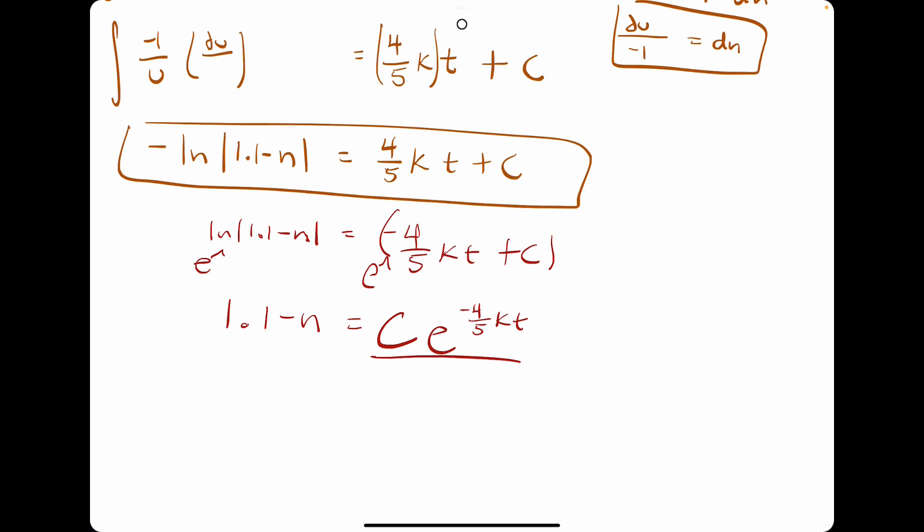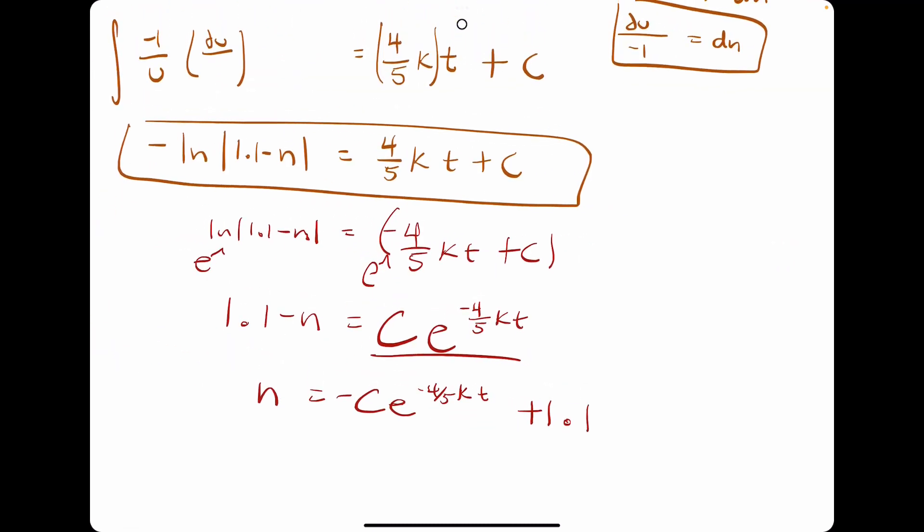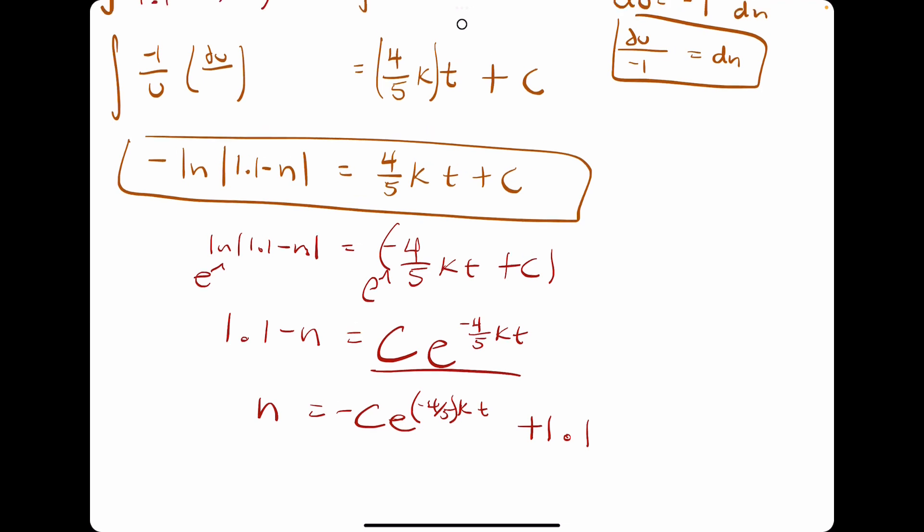So now we want to get n by itself. So how we'll do this is I will go ahead and just subtract. We'll subtract 1.1. So we'll get c e to the negative 4 fifths kt minus 1.1. And we'll go ahead and divide by a negative. Negative 1. So dividing by a negative would negate this c out in front and switch this 1.1 to a positive. So this should be our function n.